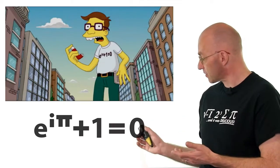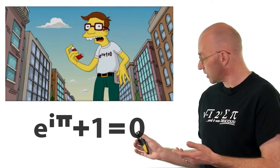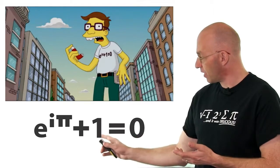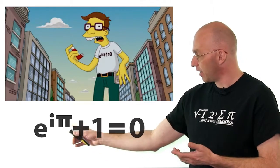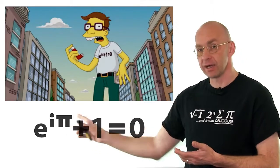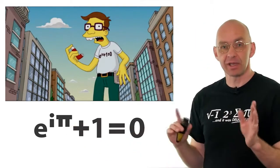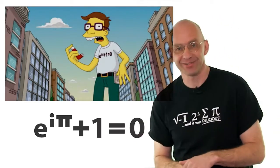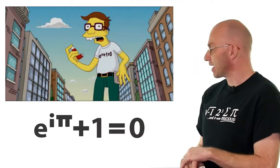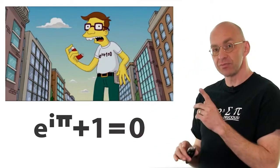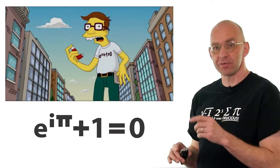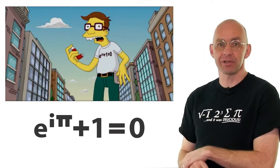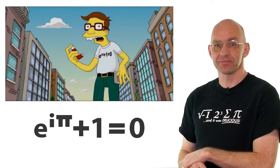It's got lots of mathematical friends in there: zero, one, pi, e and i. Maybe e and i you're not familiar with, but let's see how we can make sense of this. And actually, as far as possible, I want the Simpsons to help us make sense of this.